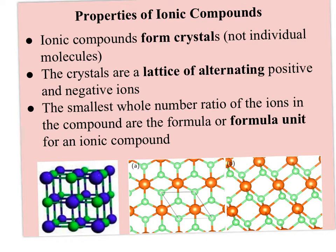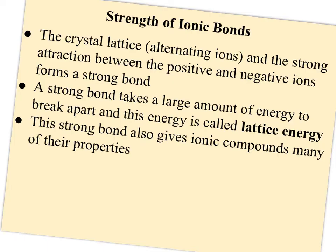The smallest whole number ratio of the ions in the compound — the smallest whole number ratio of positive ions to negative ions — is what we call the formula unit for an ionic compound. How strong are ionic bonds? Compared to covalent bonds and metallic bonds, they're pretty strong. But within ionic bonds there's differing strength. The strong attraction between the positive and negative ions forms these strong bonds, and the difference in strength is measured with something called the lattice energy — the amount of energy it would take to break apart the lattice. Think of it as the energy to break up the lattice.